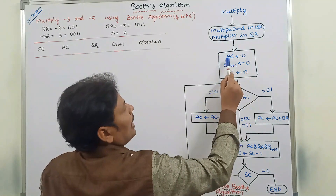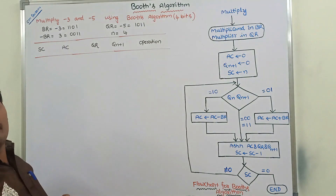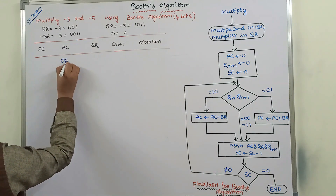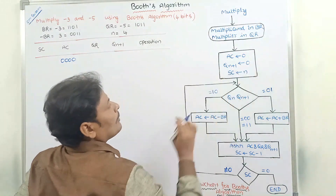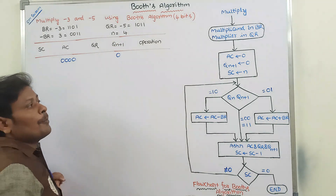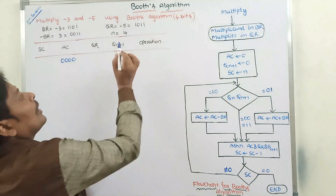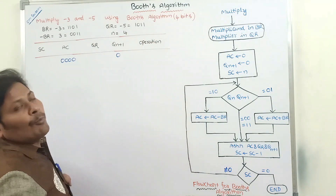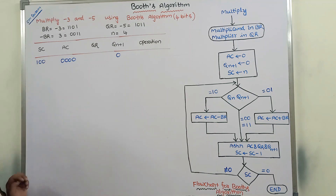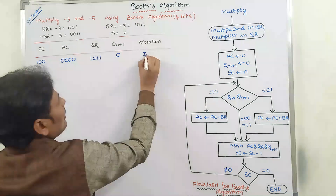The multiplicand is stored in BR register: minus 3 equals 1101, and minus BR equals 0011. The multiplier is stored in QR register: minus 5 equals 1011. Initially, the accumulator register AC is initialized with 0000. The QN+1 register is initialized with 0. The sequence counter is initialized with N, the number of bits in the multiplier, which is 4, represented in binary as 100.